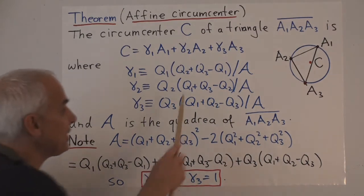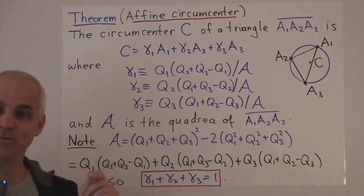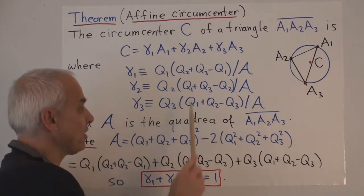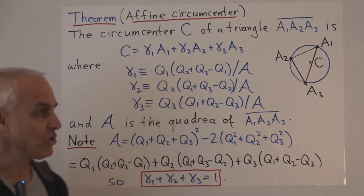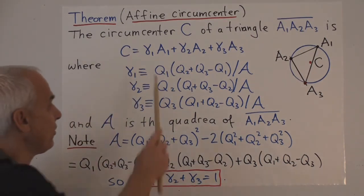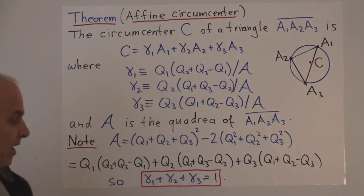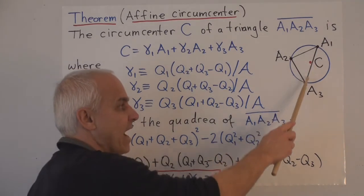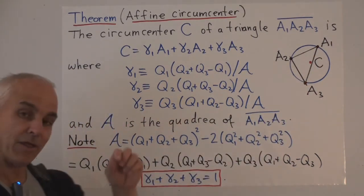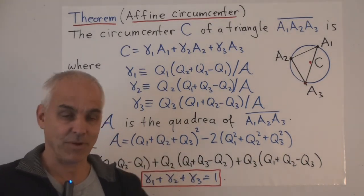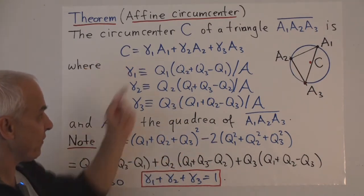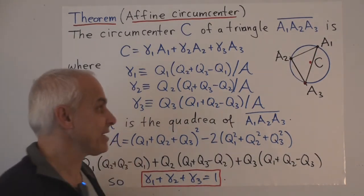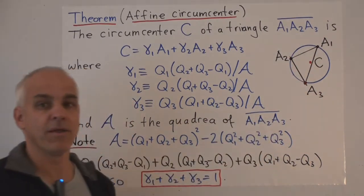Moreover, these three numerator quantities are exactly those that appear in the acuteness conditions of the triangle. So the triangle is acute if and only if all three of these quantities are positive. Since they are positive and sum to 1, they must each lie between 0 and 1, meaning the circumcenter is a convex combination of A1, A2, A3 — in other words, the circumcenter actually lies inside the triangle. The triangle is therefore acute precisely when the circumcenter lies inside or on the triangle.